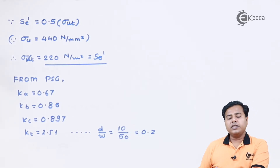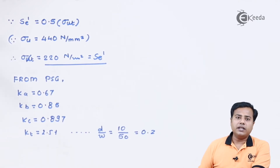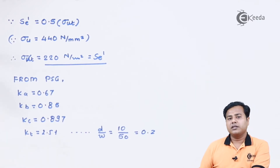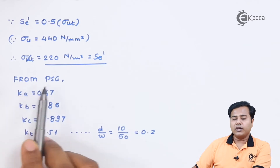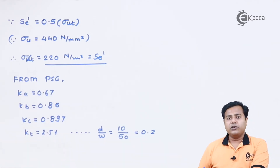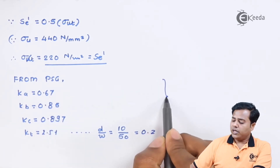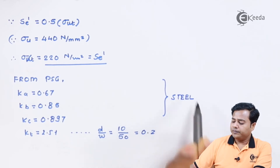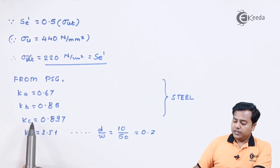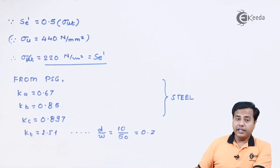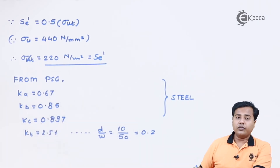With the theoretical value we are going to find the corrected value by considering different factors. The first factor, the surface finish factor, is 0.67, which can be found in the PSG data book under endurance limit for the given category of steel. The size factor given is 0.85. The reliability factor for 90% reliability is 0.897, which can also be found in the PSG data book.